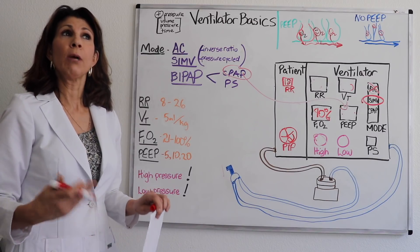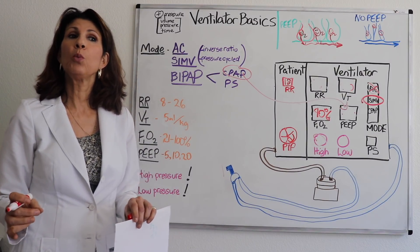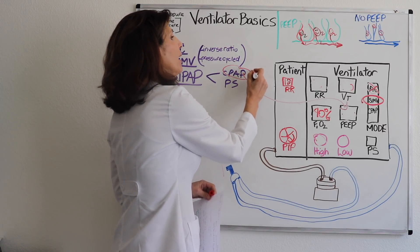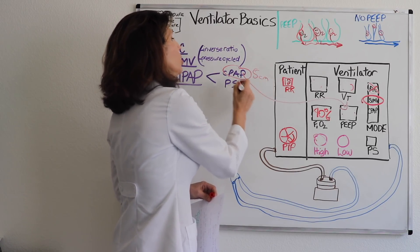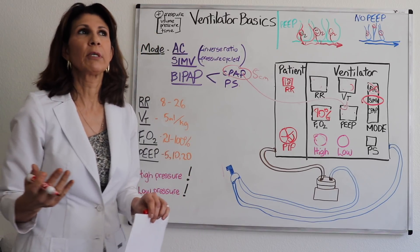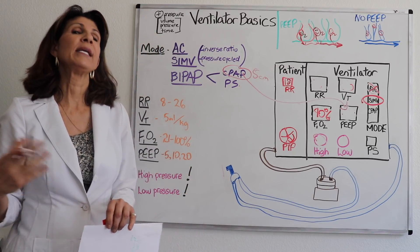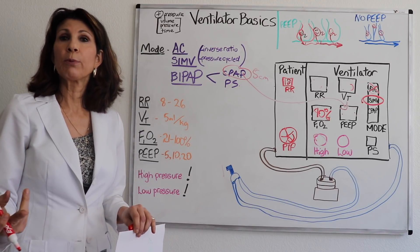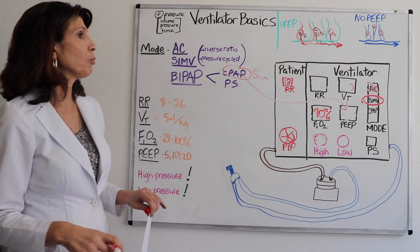What do we set these numbers at as far as CPAP and pressure support? CPAP, the numbers coincide pretty closely to what appropriate PEEP numbers would be. So you can see a CPAP of five centimeters of water pressure. You can see pressure supports not really parallel to anything, but let's say 10 centimeters of pressure that's delivered upon inspiration. Remember, decreasing that work of breathing.